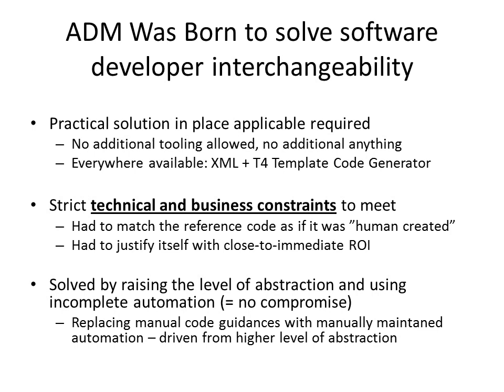We had strict technical and business constraints to meet. The end results had to match the reference code as if it was human-created, and we had to justify all the work with close to immediate return of investment, meaning that the project didn't have to justify to the stakeholders why we were investing in such a thing. We solved the problem by finding a way to raise the level of abstraction and using incomplete automation. It sounds like falling short, but it actually provides a way that we don't have to make any compromises when aiming for full-scale automation. We can stop automation and fall back to manual work on the same areas of code, so the manual workers and the automation work side by side.